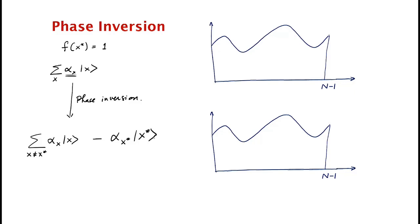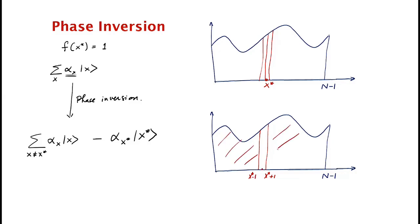Let me show you what this means pictorially. Say this is our point x*. That's the amplitude of x*, that's x* minus 1, that's x* plus 1. All other amplitudes are left unchanged. What happens to x* is that it gets inverted — instead of this amplitude, we replace it by minus of that. So that's the first operation.